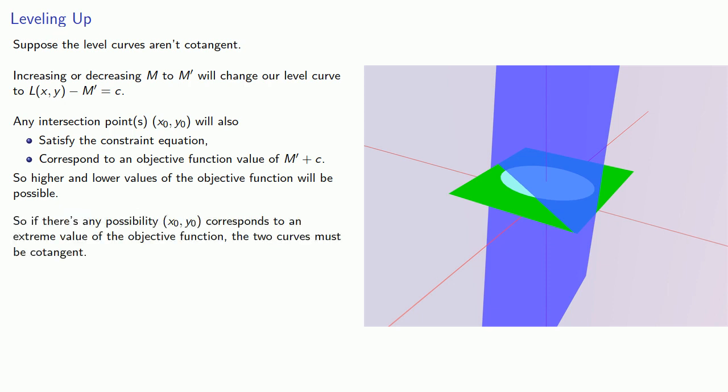So if there's any possibility a point corresponds to an extreme value of the objective function, the two curves must be cotangent.